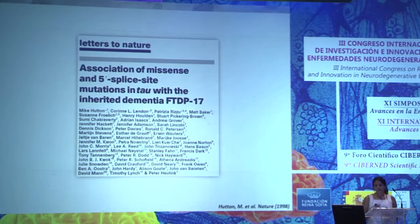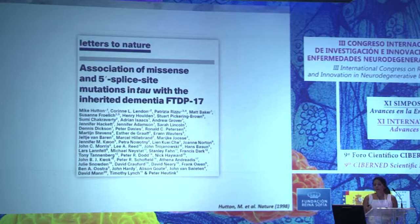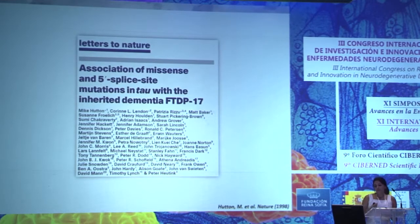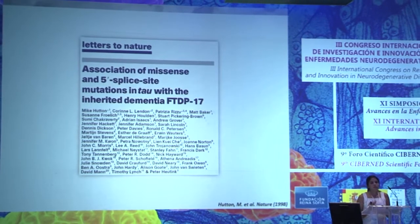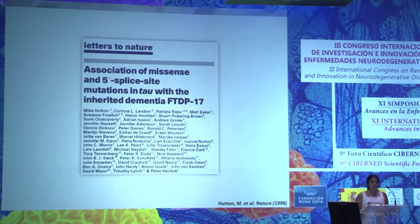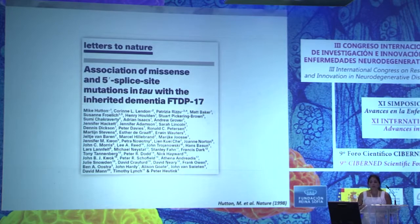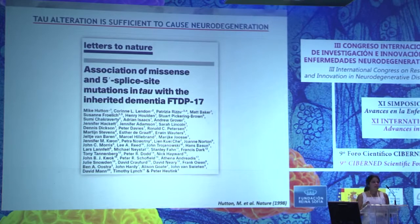In 1998, Hutton and co-workers identified for the first time tau mutations responsible for neurodegeneration in frontotemporal dementia with Parkinsonism linked to chromosome 17. This is a dementia that also affects the basal ganglia, so patients have motor symptoms — features shared with Huntington's disease, where motor symptoms are characteristic but there is also cortical atrophy and dementia. Importantly, this work described that tau alteration alone is sufficient to cause neurodegeneration.